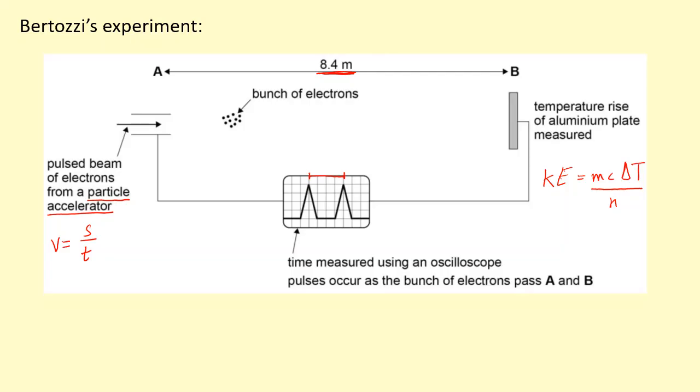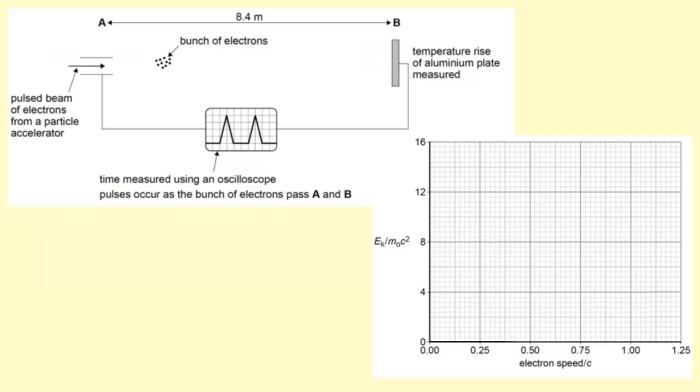What Bertozzi did was he used the particle accelerator to change the velocity at which the electrons were coming in, and he measured the corresponding kinetic energy by using the change in temperature of the metal plate, and he plotted this on a graph.